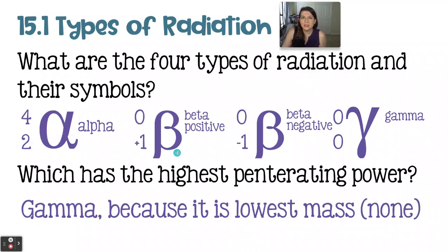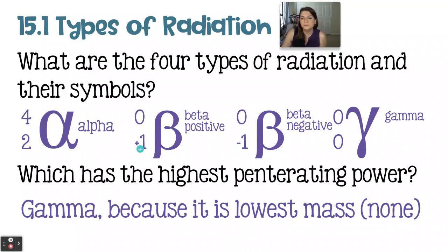Beta positive and beta negative are of the same mass, which is negligible — it comes out at zero. It's not actually zero; it is an actual particle, but it's close enough to zero, kind of like an electron. Beta positive is positive in nature, and beta negative is negative in nature. The beta symbol is a bee with a long back, and those two are nearly identical aside from the difference in charge. Beta negative is effectively an electron.